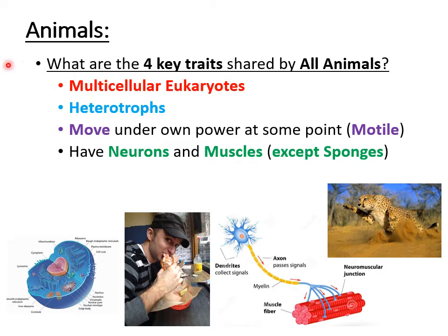The second point is that animals are heterotrophs. Heterotrophs are organisms that have to take in food — they take in organic substances to break them down to obtain carbon, which they then use as their building blocks. So animals have to take in organic material to obtain their carbon source, making them heterotrophs as opposed to autotrophs, which are self-feeders that can break down inorganic material for carbon.